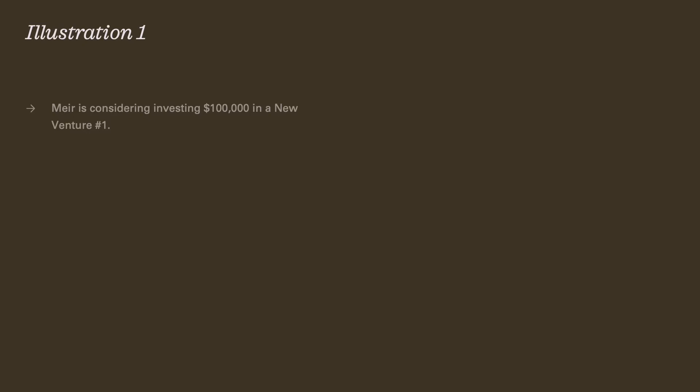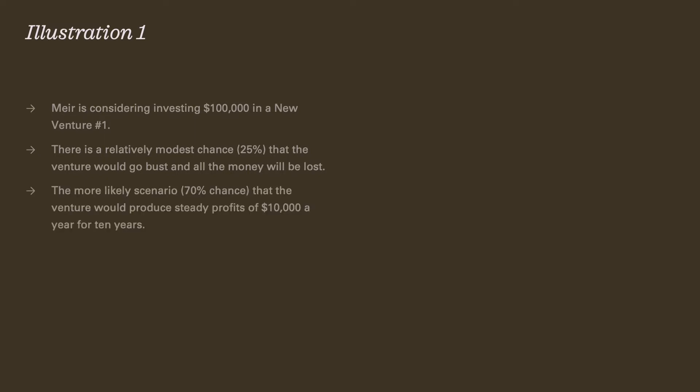Let me give you an illustration. We're going to use the same illustration with some slight variation three times. Meyer is considering investing $100,000 in new venture number one. There is a relatively modest chance — a 25% chance — that the venture will go bust and he'll lose everything. There's a more likely scenario: we estimate a 70% chance that the venture will produce steady profits of $10,000 a year for 10 years, for a total of $100,000 in profit.